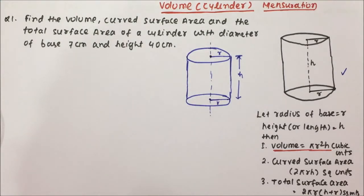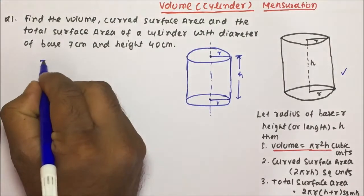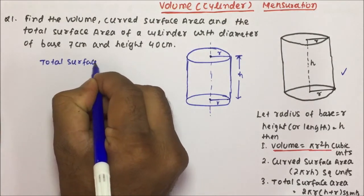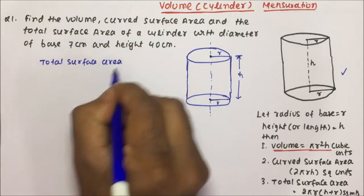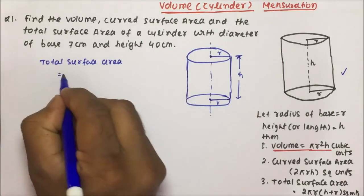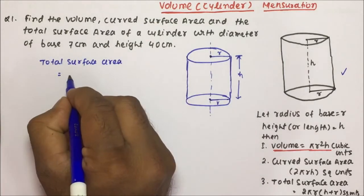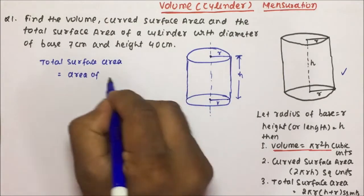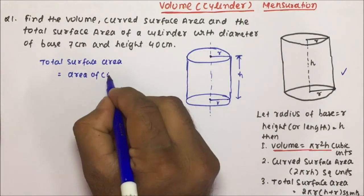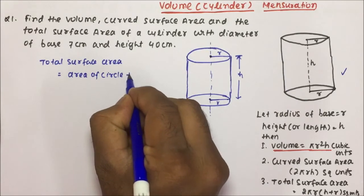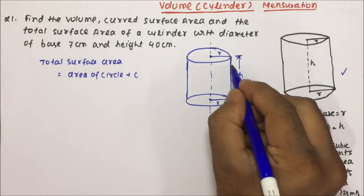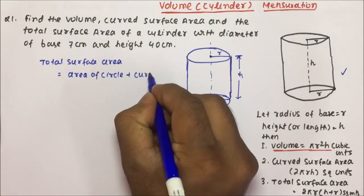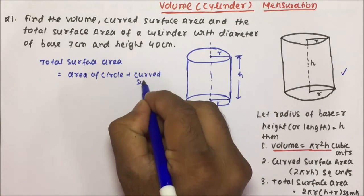Let's see how we calculate the total surface area. The total surface area will be equal to the area of the two circles plus the curved surface area. You can see there are two circles.